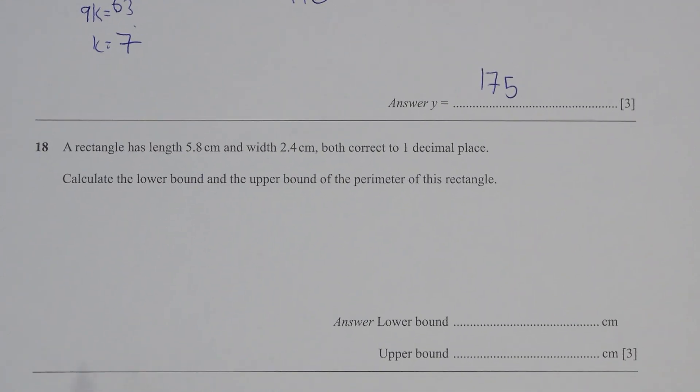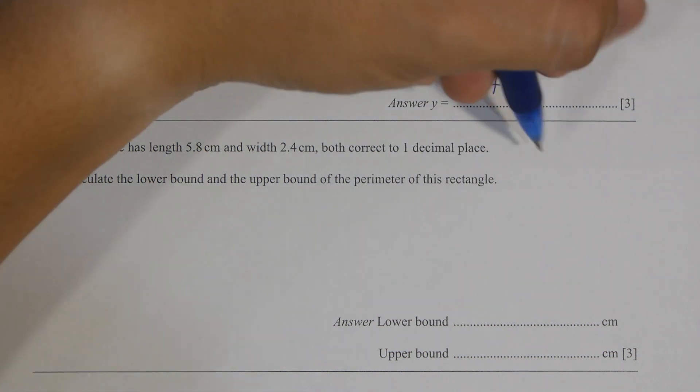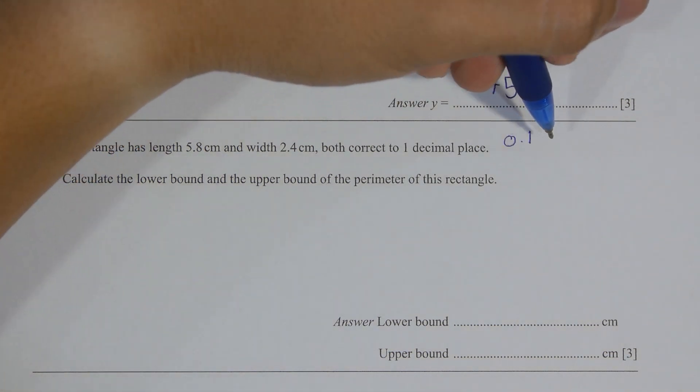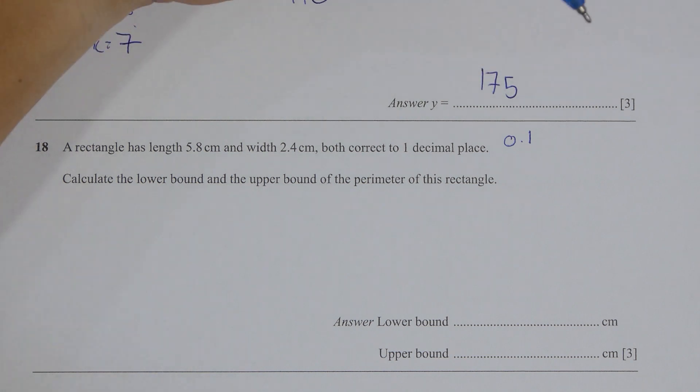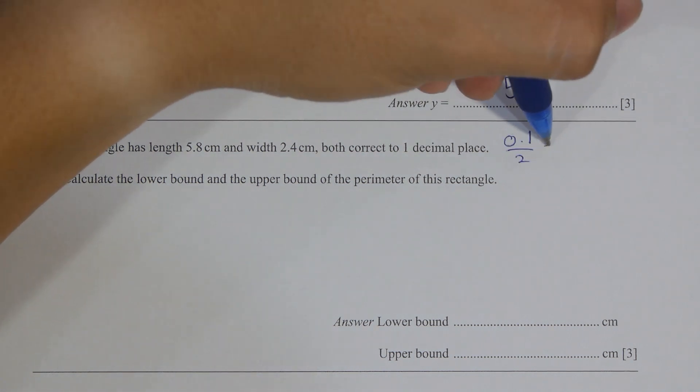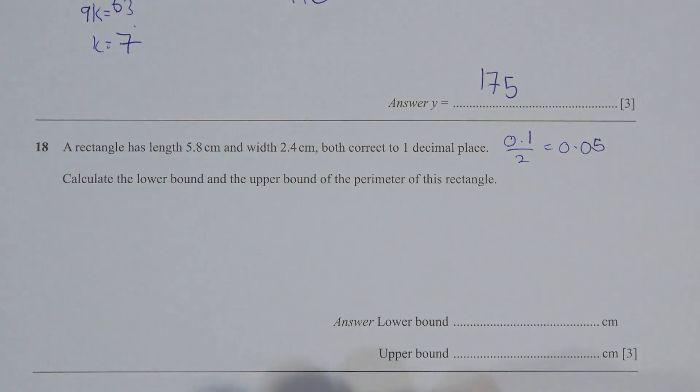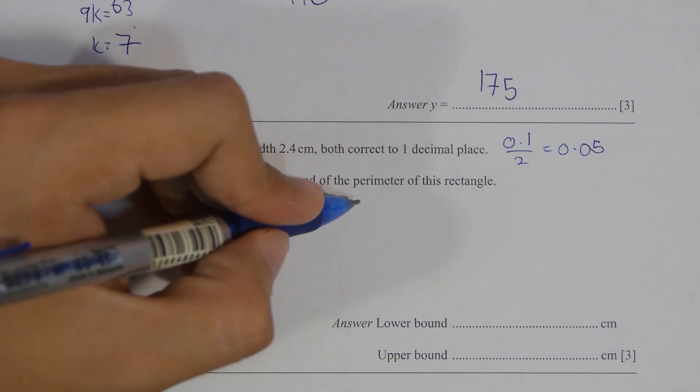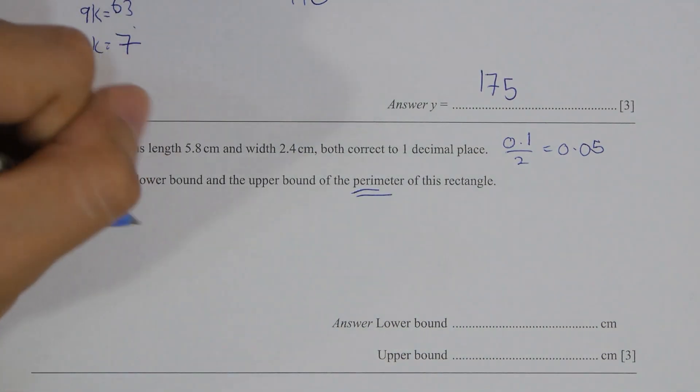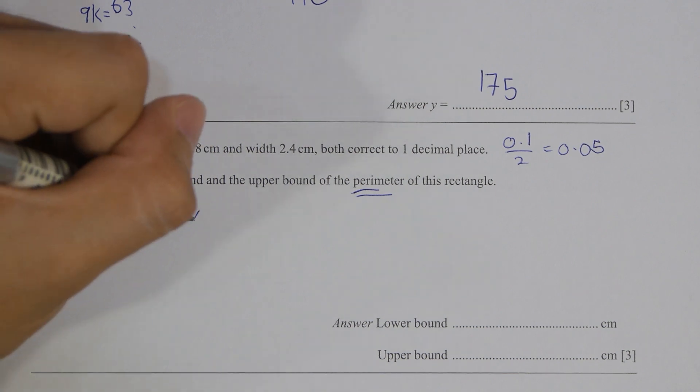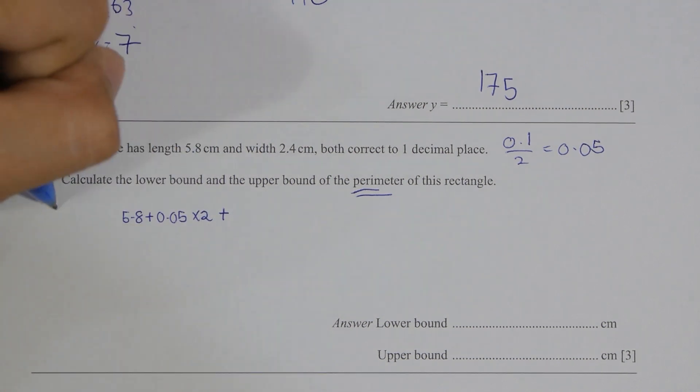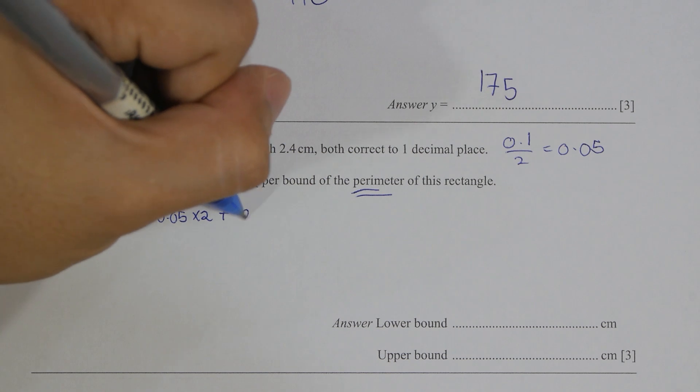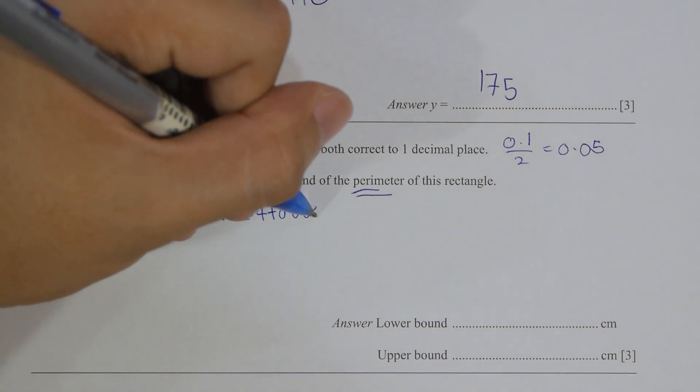Question 18, a rectangle has a length of 5.8 and a width of 2.4, both corrected to one decimal place. So 0.1 divided by 2, then you get 0.05. Calculate the upper bound. So 5.8, you are required to plus 0.05, multiply it by 2, plus 2.4 plus 0.05 times by 2. So the upper bound, the perimeter will actually be 16.6.